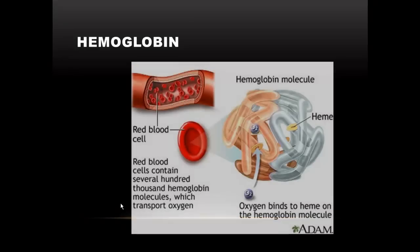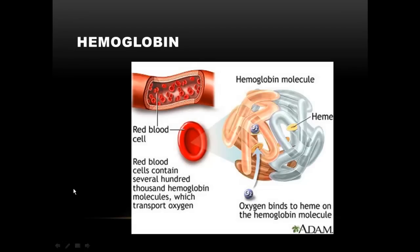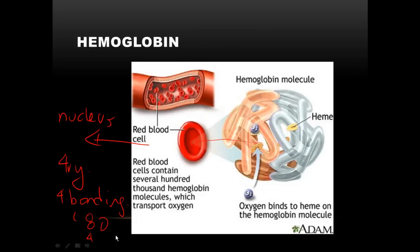So we also need to make sure that we remember hemoglobin is a huge, large protein, so large, in fact, that the red blood cells cannot carry a nucleus. So they've thrown the nucleus away in place of hemoglobin. Hemoglobin occupies almost the entire cell. Hemoglobin is an example of a protein with quaternary structure. It's two polypeptide chains held together. They have four bonding spots, binding sites, so they can carry eight oxygen atoms, or four O2 molecules.